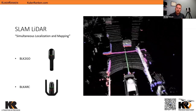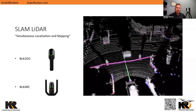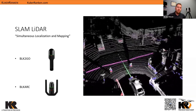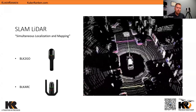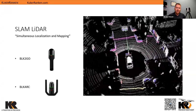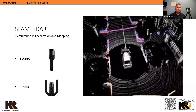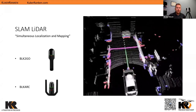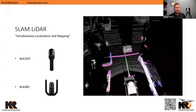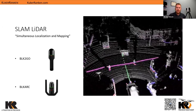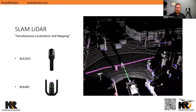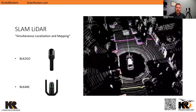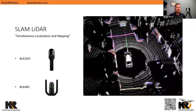Examples of SLAM LIDAR include the BLK2GO and the BLK ARC system. The BLK2GO has an internal battery so you can hold it and walk with the system. The BLK ARC system is tethered to a robot of some kind that powers the system.